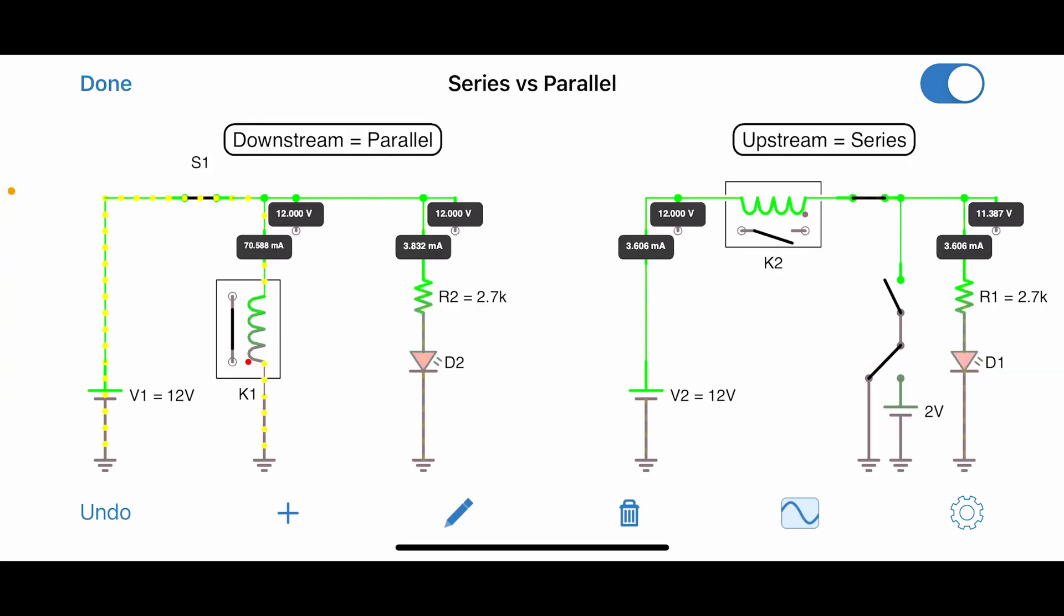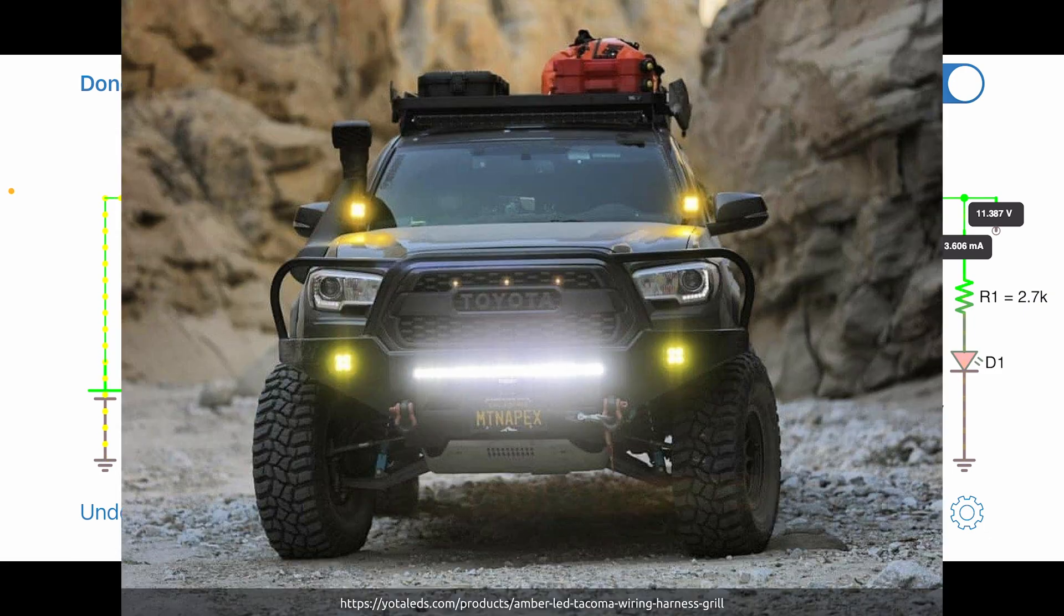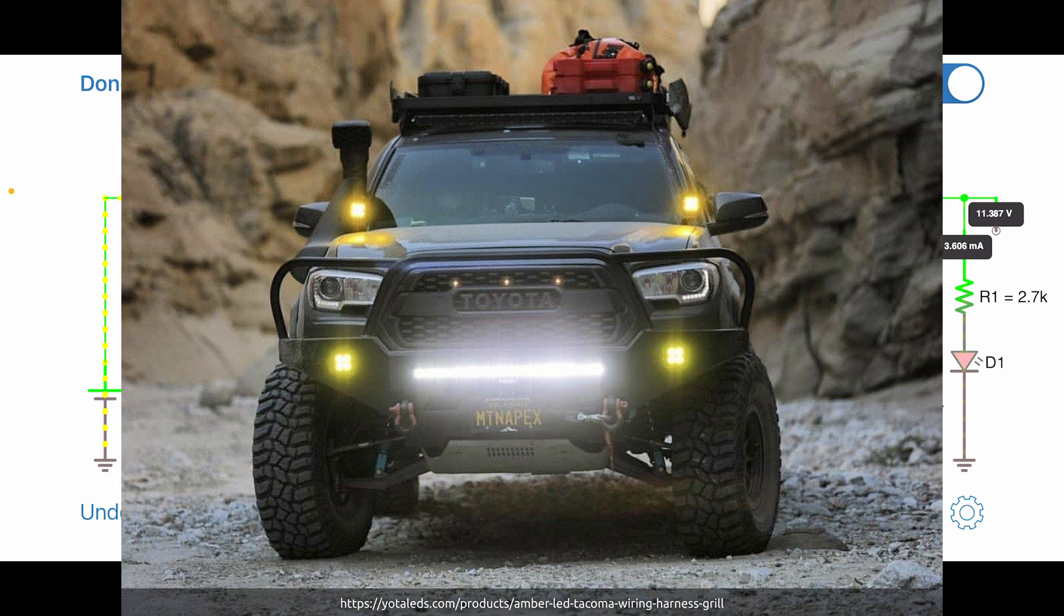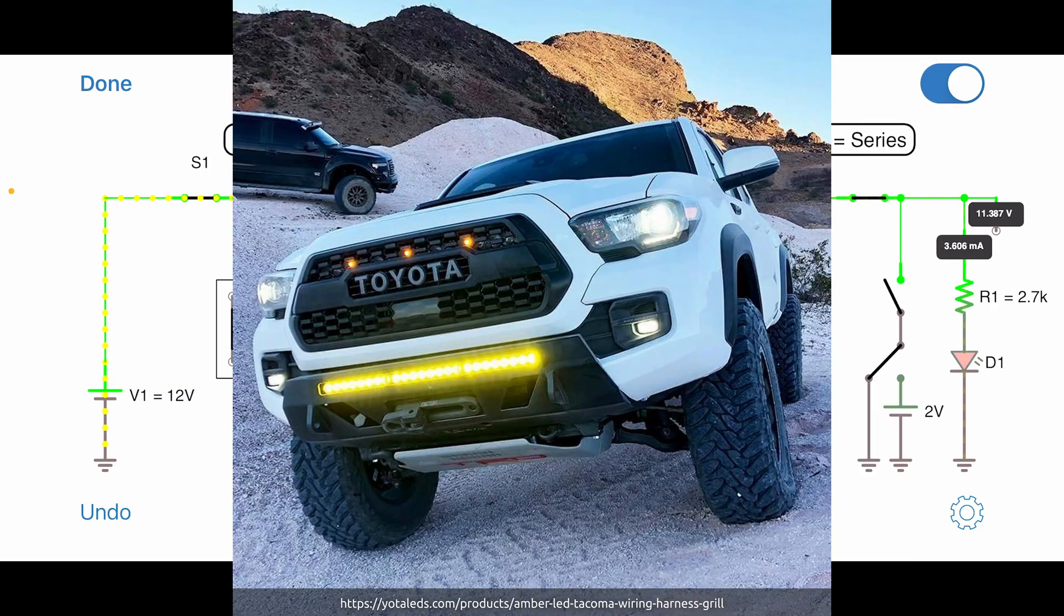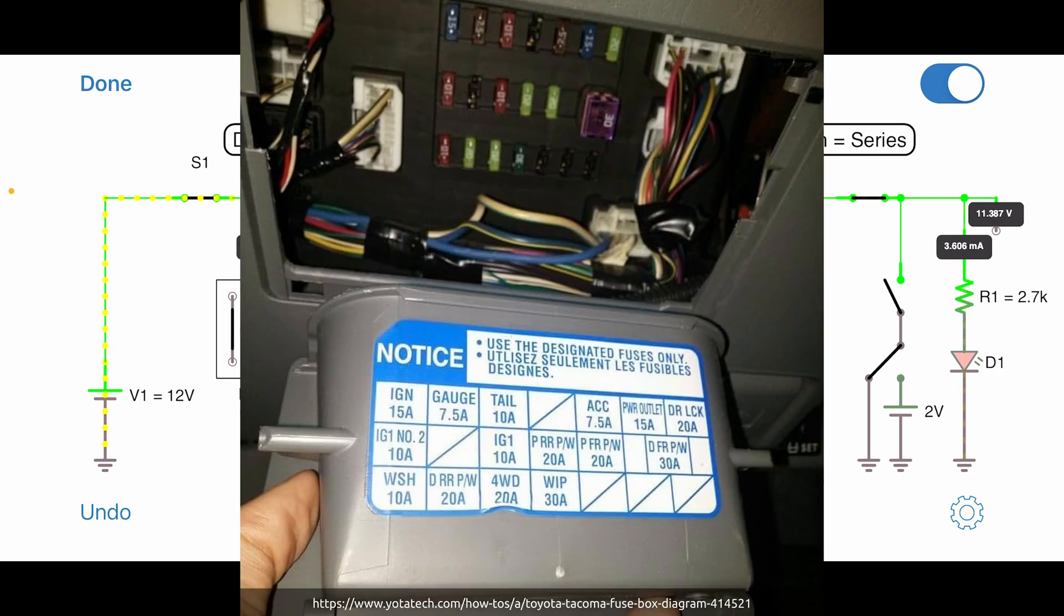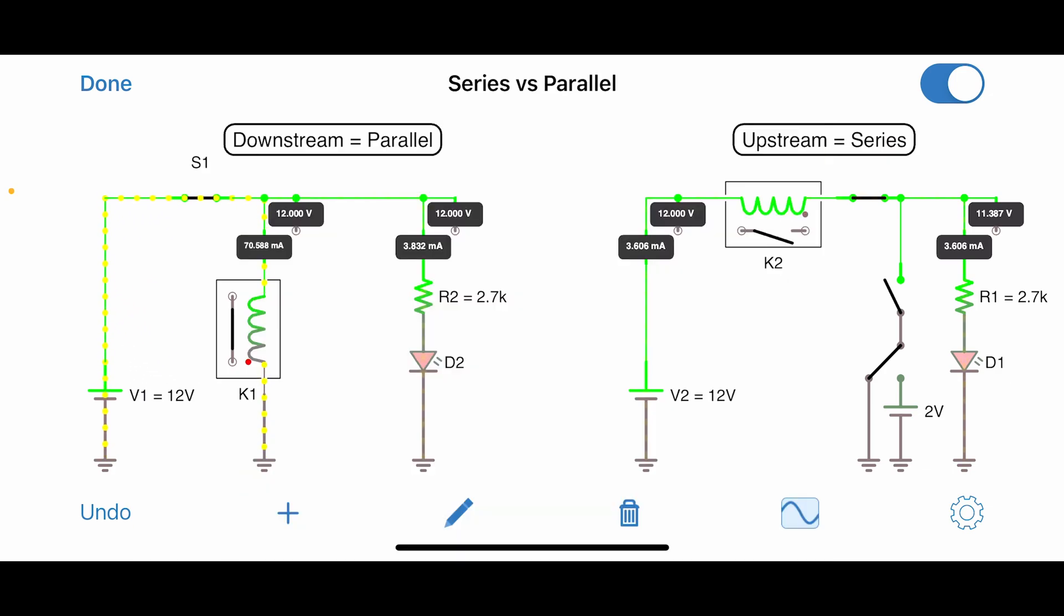So therein lies your problem. If you plan on using these switches how they're intended, for an aftermarket accessory where you're going to be wiring in a relay downstream somewhere in the engine bay with a wire leading to it, and then powering that switch from a fuse in that little compartment area, then that's going to work just fine. But if you plan on trying to control OEM accessories using one of these indicator switches, unfortunately, because of that series configuration that occurs with having that relay upstream, it's just not going to work.